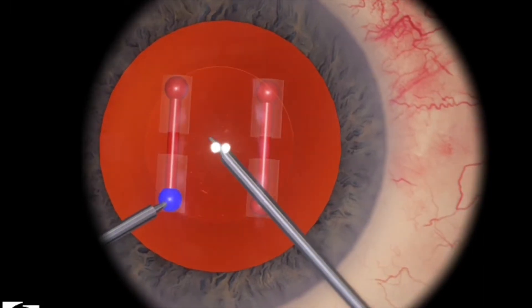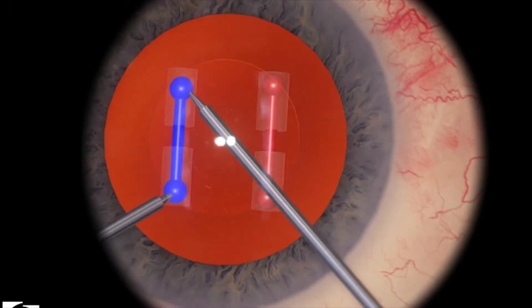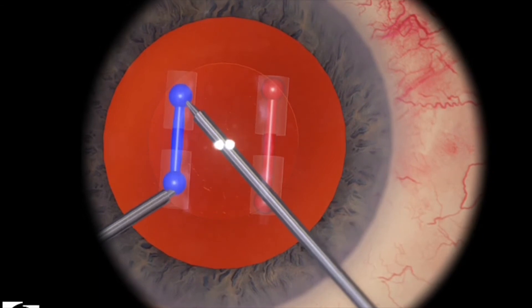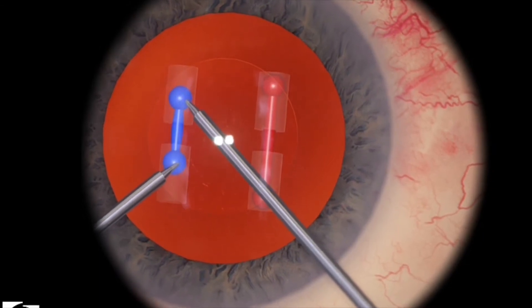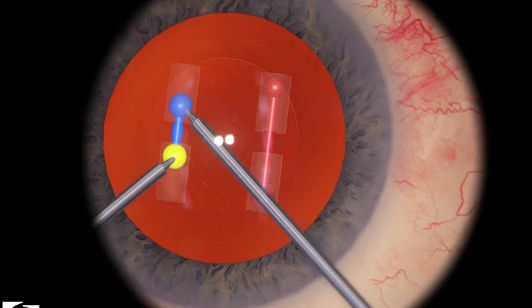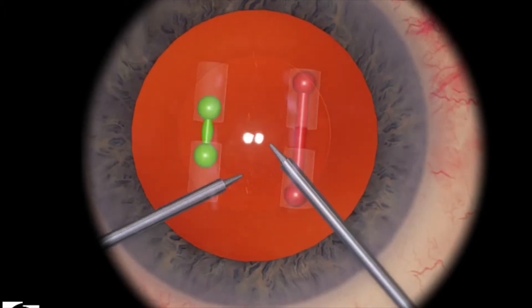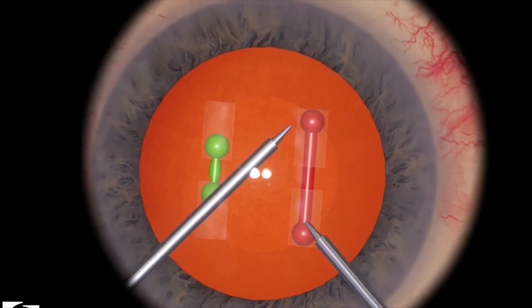In this particular level, your job is to move the opposing spheres together. Now, you have to be very slow and methodical, just like the Cataract B level. Make sure that your instrument tips are buried deep inside the sphere.